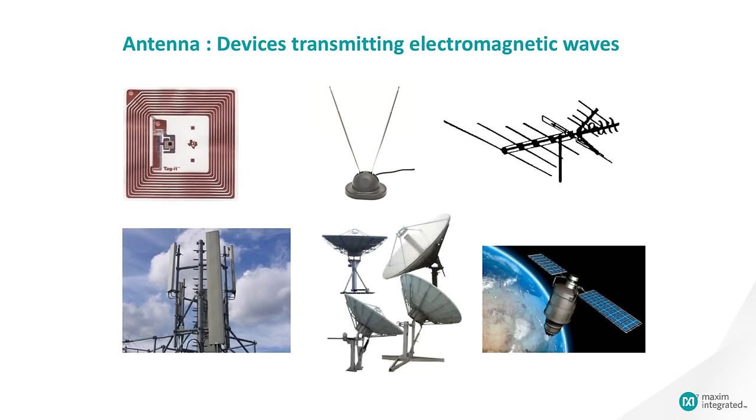Antennas can increase the signal strength, both at the transmitter and receiver. Received signal strength is roughly proportional to the area of the antenna. A larger antenna with more area will capture more of the available power, producing a stronger signal for the receiver.